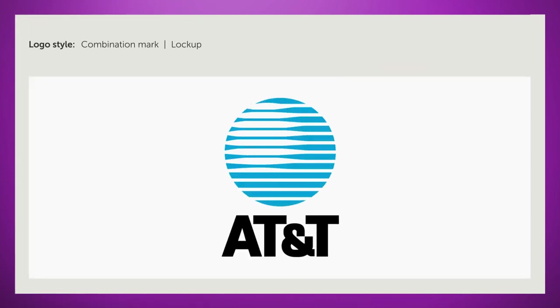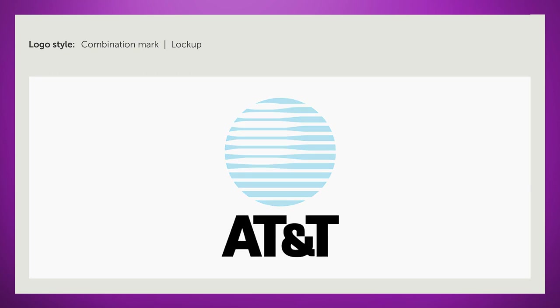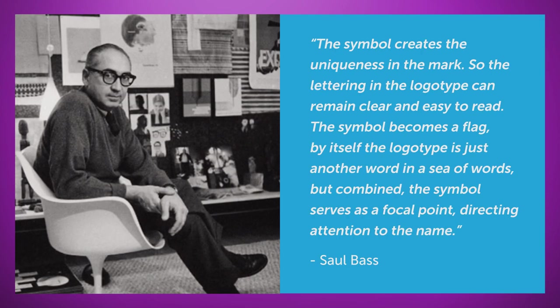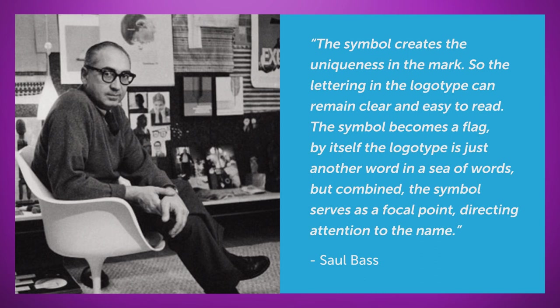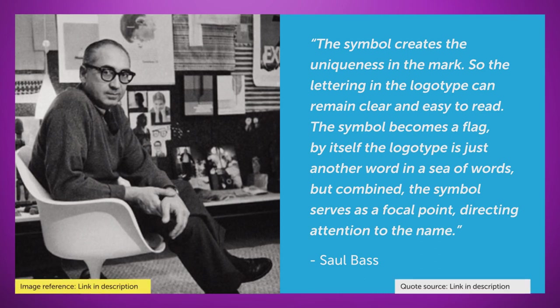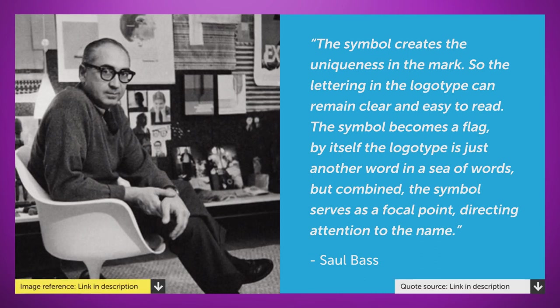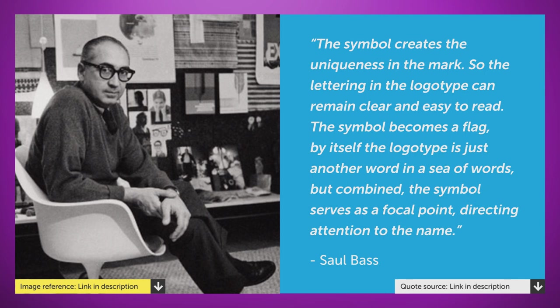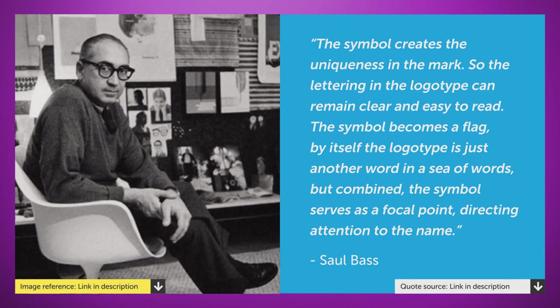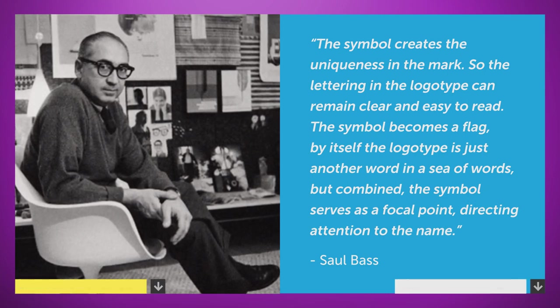The AT&T logo is essentially a combination mark. It includes two visual elements: the prominent logo mark, and a logotype. In this case, more specifically a letter mark, because it's an acronym. To quote Saul Bass: 'The symbol creates the uniqueness in the mark, so the lettering in the logotype can remain clear and easy to read.'